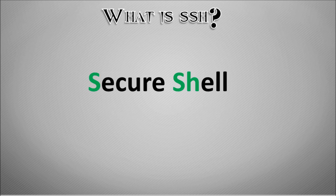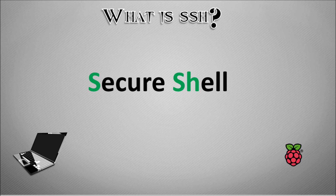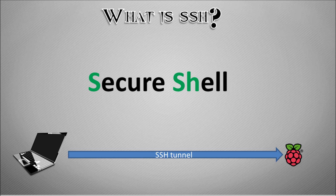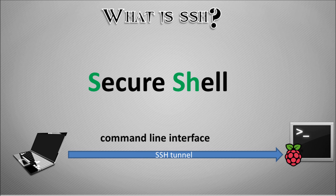What is SSH? SSH is a secure shell. On one side you could have a laptop or a PC, and on the other side you'll have a Raspberry Pi or normally any Unix-based operating system. Between those two devices we can open up an SSH tunnel, which gives us the ability to view the command line interface from the Raspberry Pi on another device, such as our laptop.